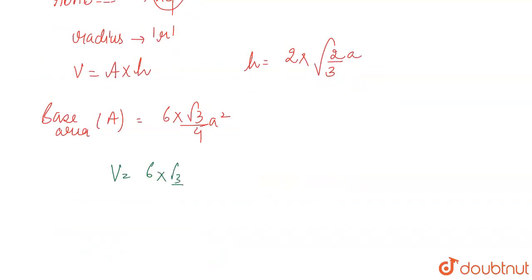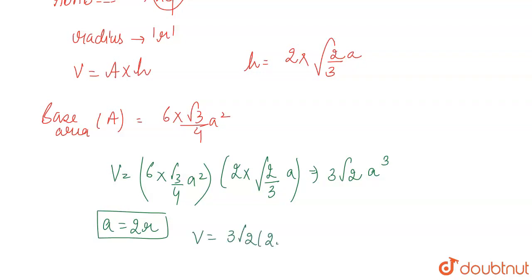So what will the volume of the unit cell be? 6 into root 3 by 4 a square and height is 2 into under root 2 by 3 a, which gives 3 under root 2 a cube. If we put a equals 2r, then volume is 3 root 2 times 2r cube, so volume is 24 under root 2 r cube.